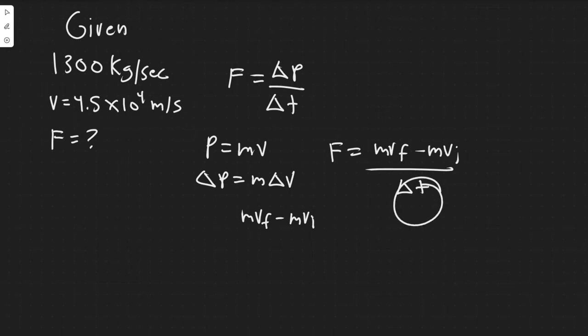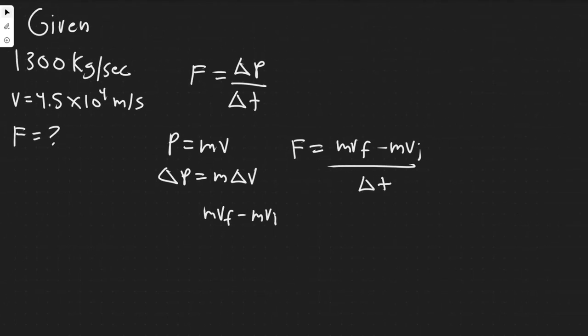And then the change in momentum, this is where it's kind of tricky, but essentially the initial velocity is zero because we're assuming that it's basically zero in the beginning. And then the momentum or the change in it would just be what the momentum is now.